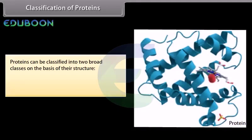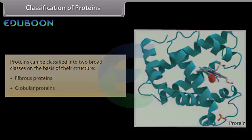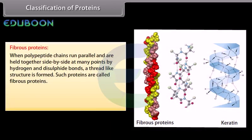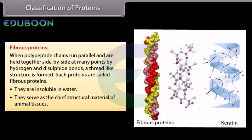Proteins can be classified into two broad classes on the basis of their structure: fibrous proteins and globular proteins. Fibrous proteins: when polypeptide chains run parallel and are held together side by side at many points by hydrogen and disulfide bonds, a thread-like structure is formed. Such proteins are called fibrous proteins. They are insoluble in water. They serve as the chief structural material of animal tissues, for example, keratin in skin, hair, nails, horn and wool.